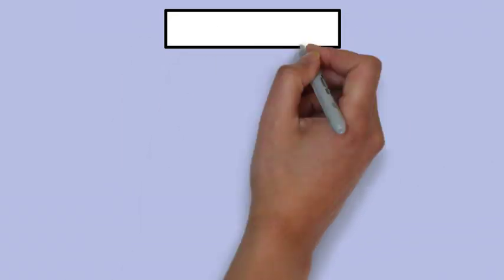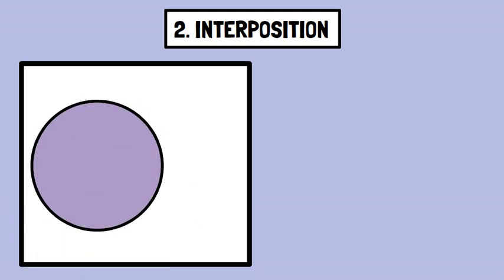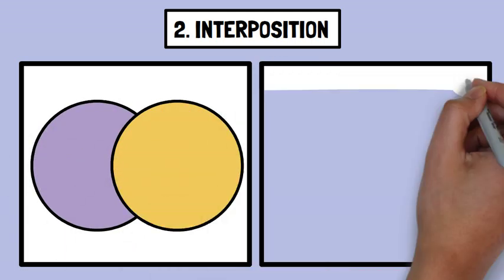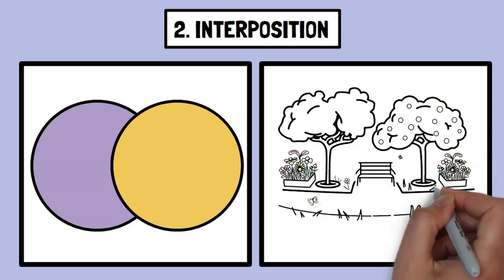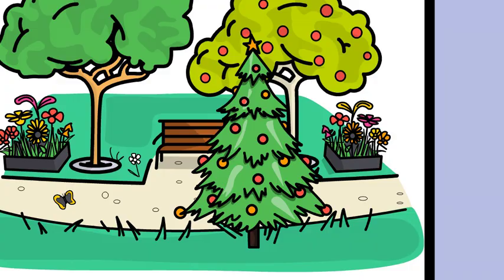Number two, interposition or overlap. When one object partially blocks another, the blocked object is perceived as being farther away. For example, if you see a tree trunk partially covering a bench, you understand that the bench is behind the tree.